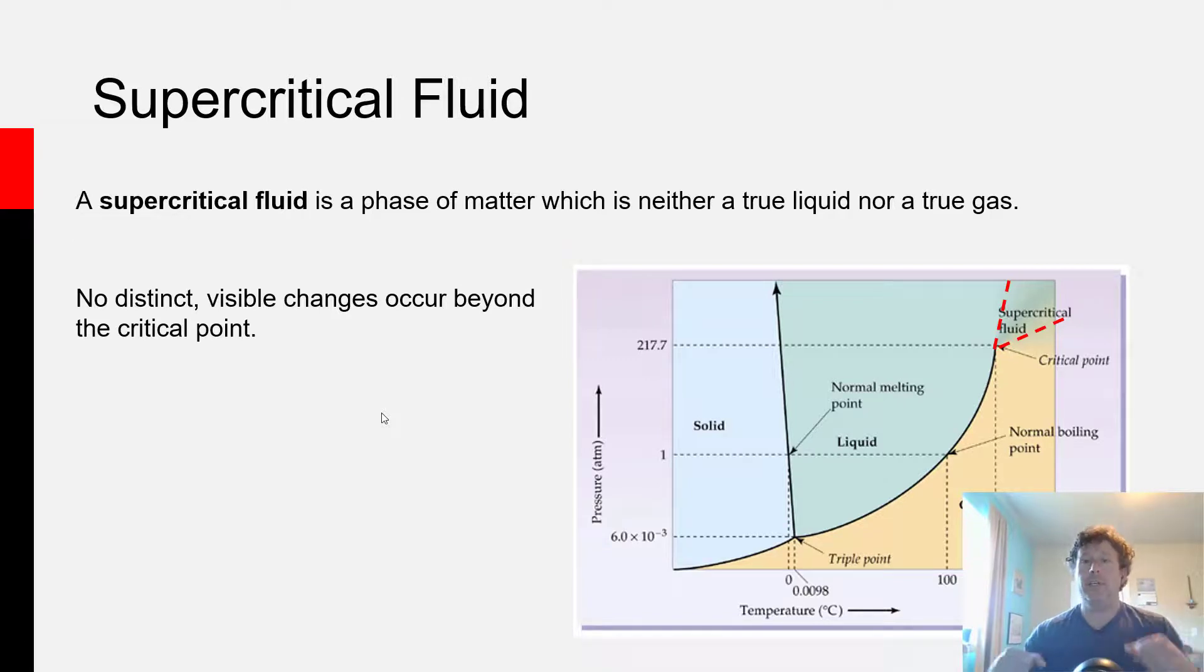So once it forms a supercritical fluid, you can continue to increase the pressure and the temperature, and it's not necessarily going to enter any other phase of matter. Once it becomes a supercritical fluid, as long as you maintain at least that pressure and temperature, or another way of saying that is once you move beyond the critical point on the phase diagram, it remains a supercritical fluid.